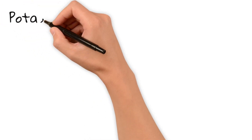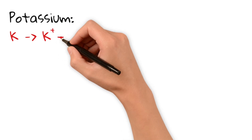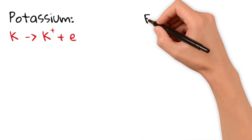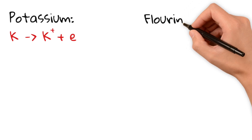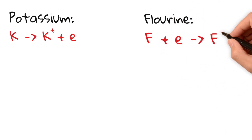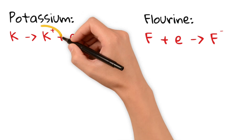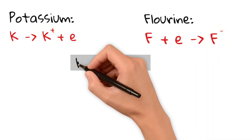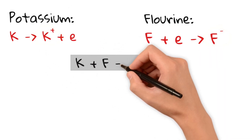Here's the answer. Potassium is a metal with one electron in its outer shell. It loses this electron, forming a K⁺ ion. Fluorine is a nonmetal with seven electrons in its outer shell. It gains one electron, forming an F⁻ ion. The K⁺ and F⁻ ions attract, forming an ionic bond.